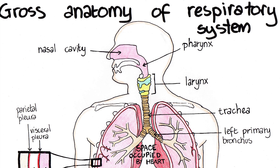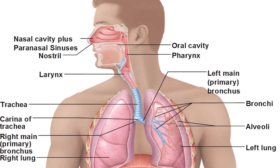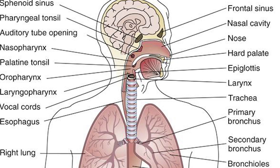The upper tract includes the nose, nasal cavities, sinuses, pharynx and the part of the larynx above the vocal folds. The lower tract includes the lower part of the larynx, the trachea, bronchi, bronchioles and the alveoli.